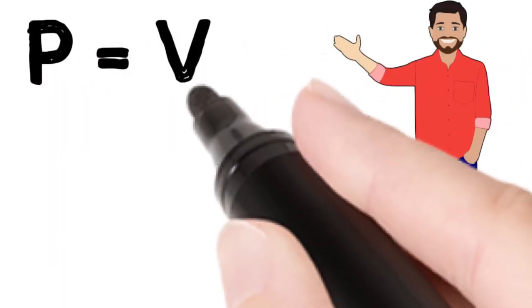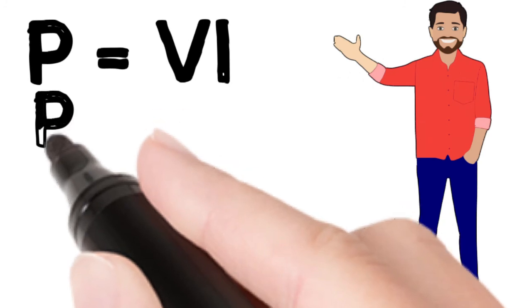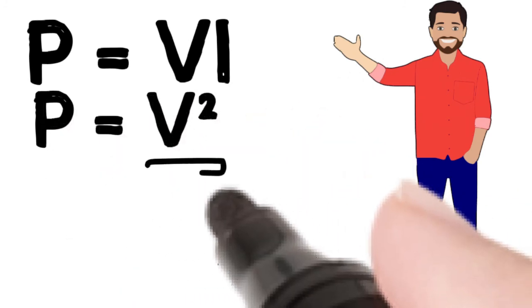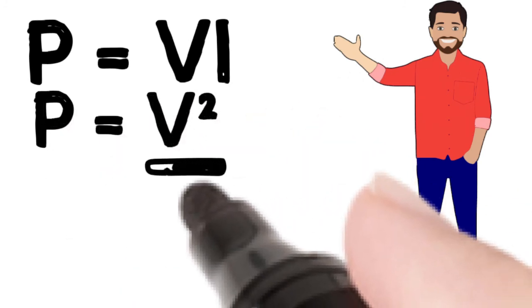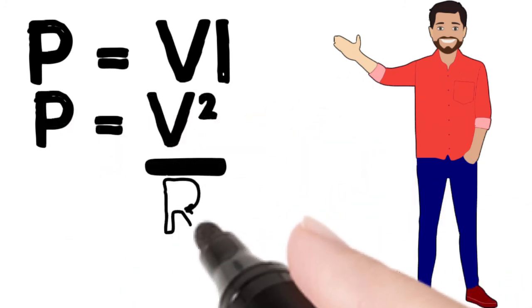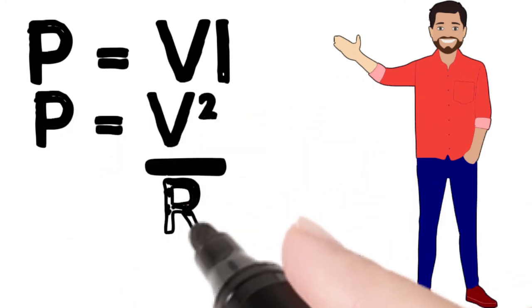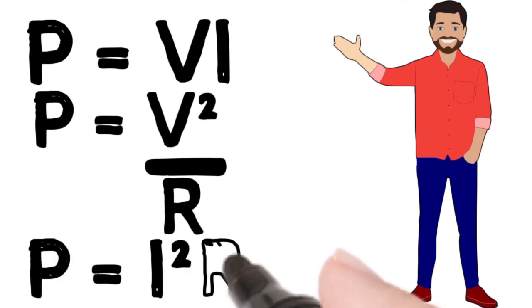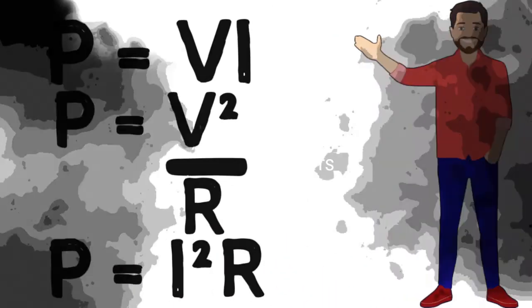Listing the power formulas together: P = VI, P = V²/R, and P = I²R.